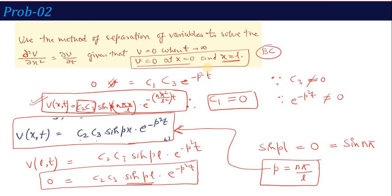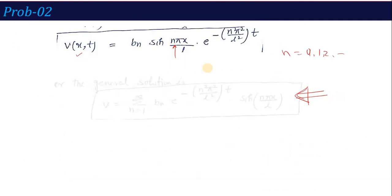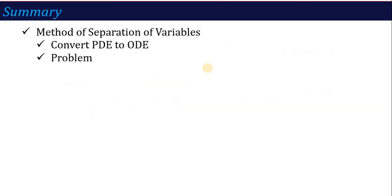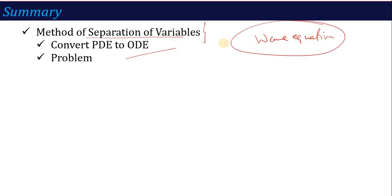This is the final solution for this problem after applying both boundary conditions. This completes the method of separation of variables. You now have two example problems — one from the last lecture and one from this lecture — please practice both to build confidence, as this method repeats in every question in this unit. In the next lecture, we will start the next topic of this unit: the solution of the one-dimensional wave equation. Stay with me, see you in the next lecture. Thank you.